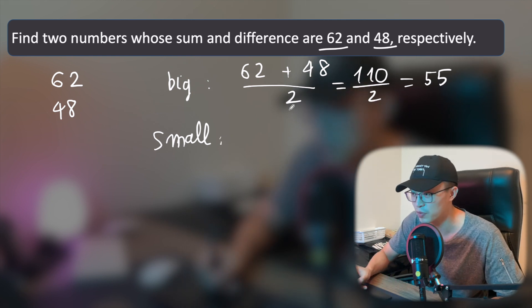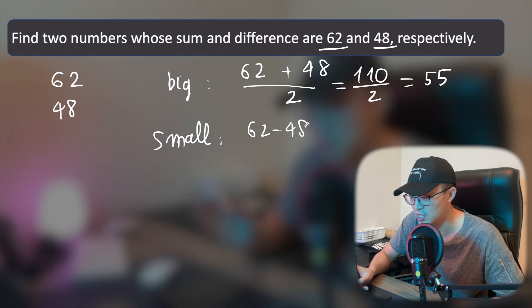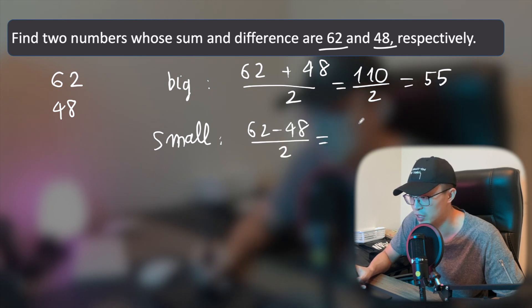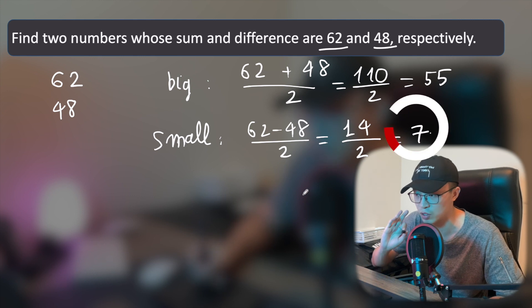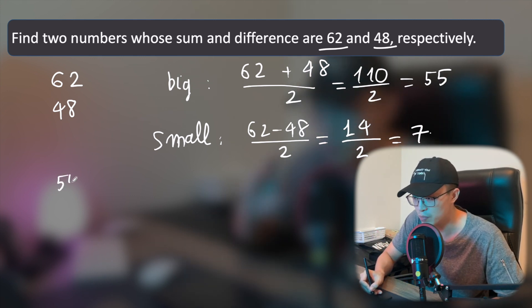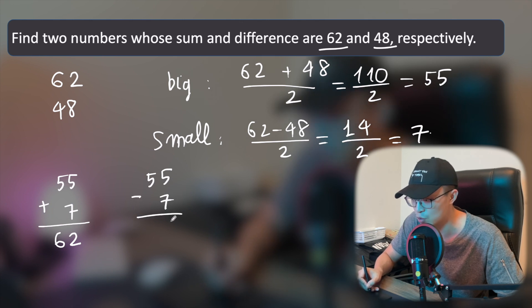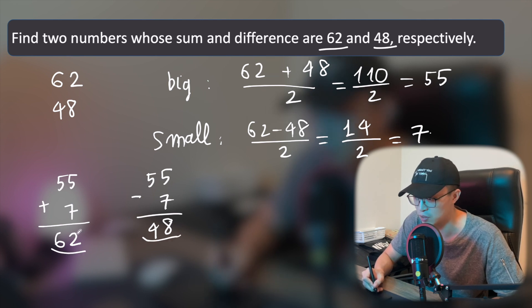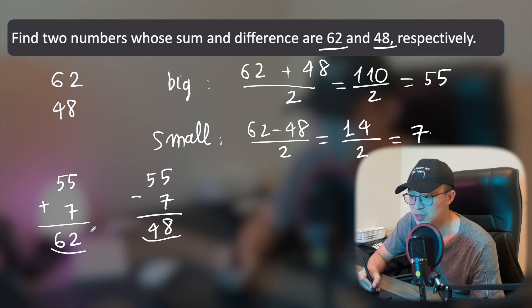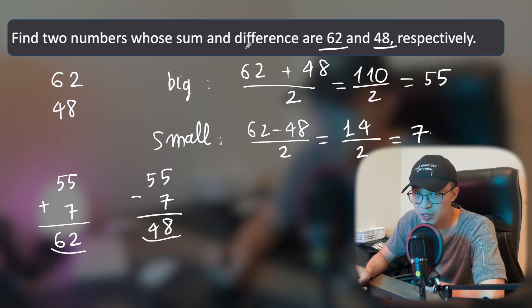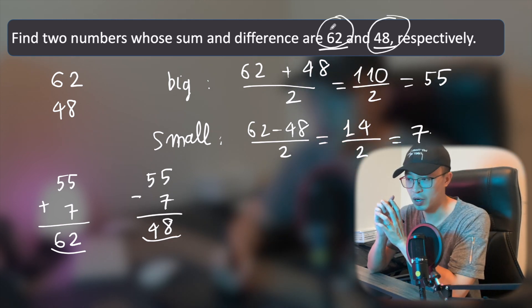To find the smaller number, use subtraction: 62 minus 48 equals 14, divided by 2 gives you 7. So 7 is the smaller number. Let's check: 55 plus 7 equals 62, and 55 minus 7 equals 48. The sum and the difference are 62 and 48, which is the same as the question. Correct!